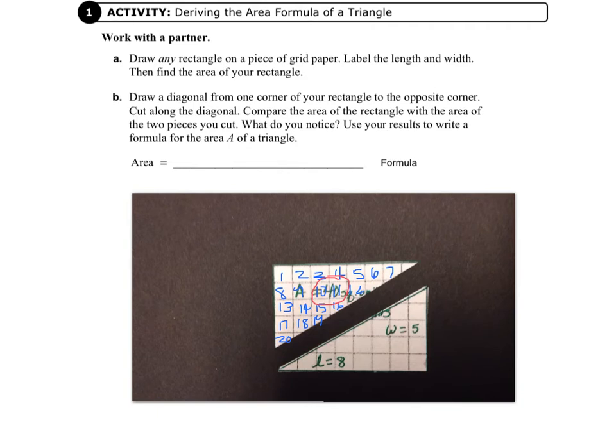So, the bottom of a triangle is called the base, and the tall part is called the height. And we know that it's half of a rectangle. So, we've just come up with the formula for the area of a triangle.